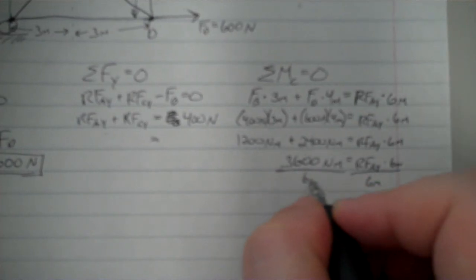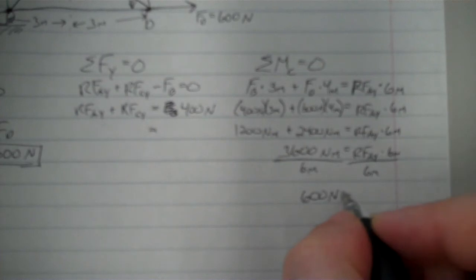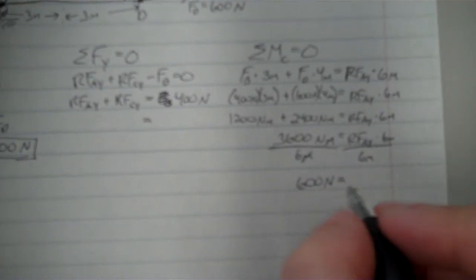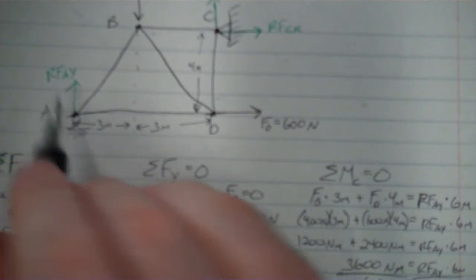If I divide both sides by 6 meters, I should get 600 newtons, because meters cancel out, is RFAY. Great, that's another one, 600 newtons. And RFAY, so I know this is equal to 600 newtons.